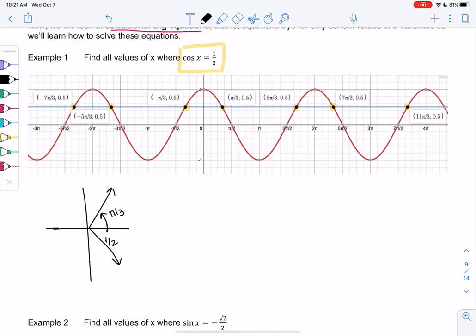The other option would be down here, which would be negative pi over three, or we could go around this way and that would be five pi over three. Then to get all the solutions you can go around again, so you can add two pi, four pi. You can add circles.